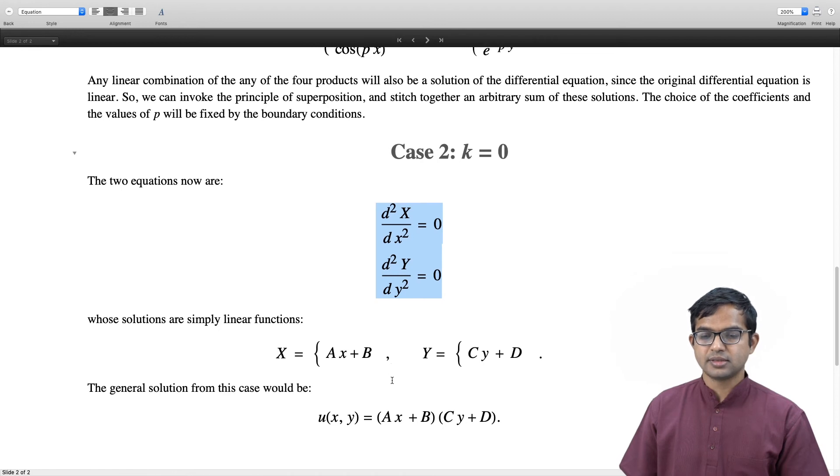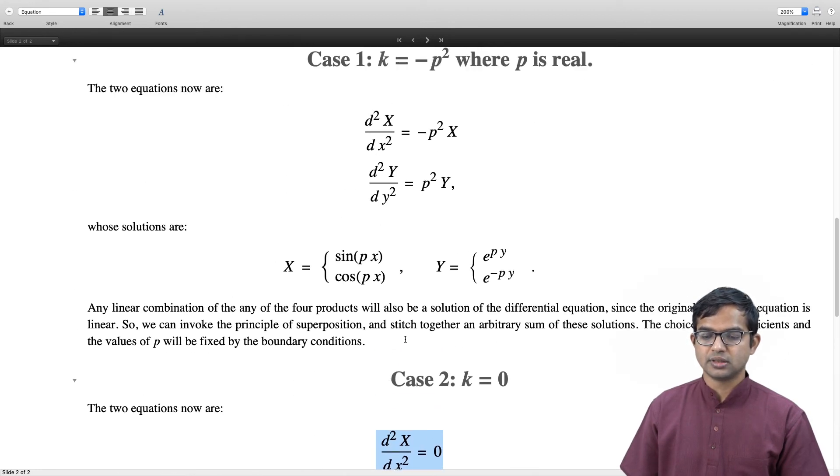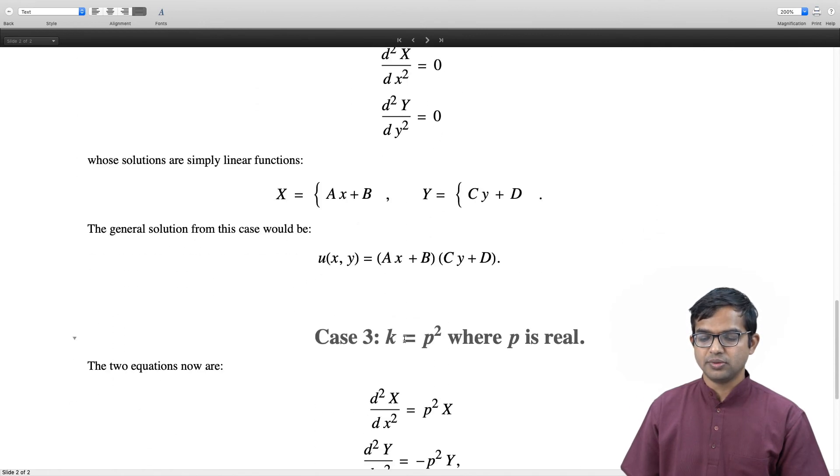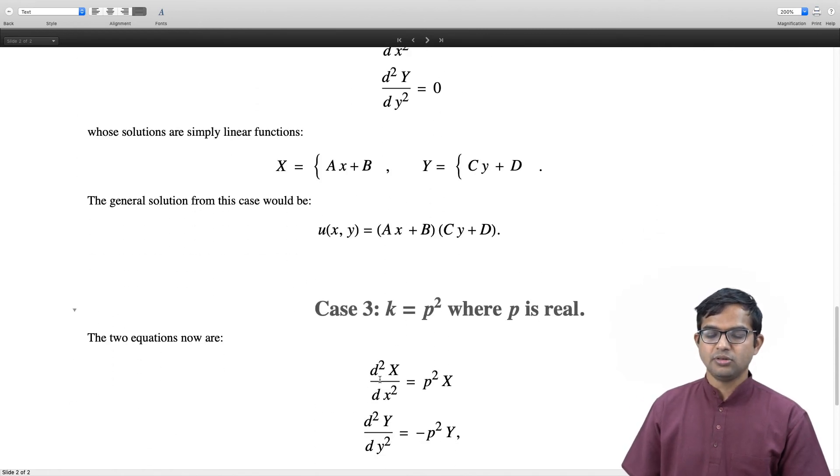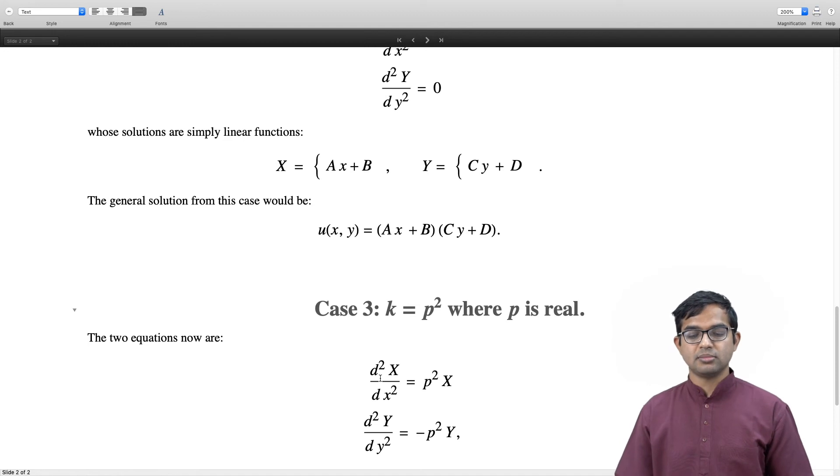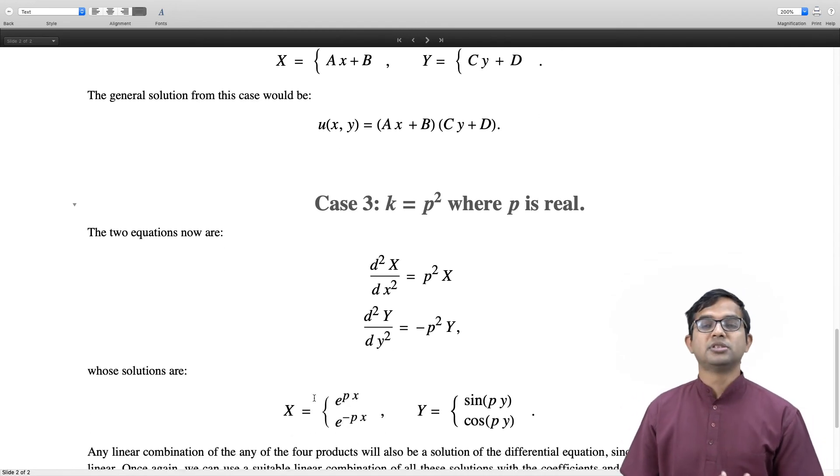The third case is a mirror image of the first. Suppose we have k = p² where p is real. Then d²X/dx² = p²X but d²Y/dy² = -p²Y. This is reversing the roles played by x and y. Now you get exponentials for x and sines and cosines for y: X = e^(px) or e^(-px), and Y = sin(py) or cos(py).